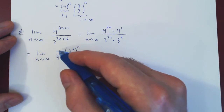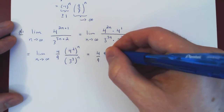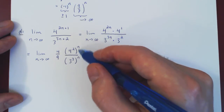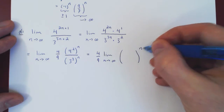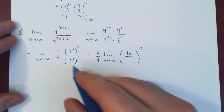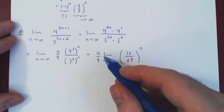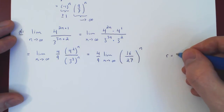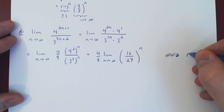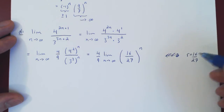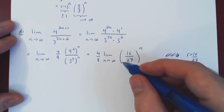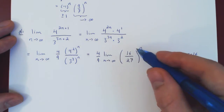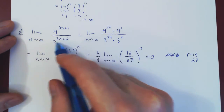The factor 4 over 9 is a constant multiple with respect to n, so we factor it out of the limit. Then the numerator and denominator are both powers of n and can be combined under a single power: 4 squared is 16 and 3 cubed is 27. So r is 16 over 27. In absolute value this is strictly less than 1, so we're taking larger and larger powers of a number smaller than 1, which shrinks to 0. And 4 over 9 times 0 is simply 0, so the original limit equals 0.